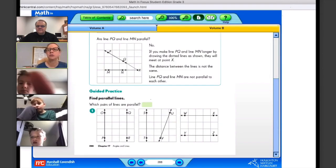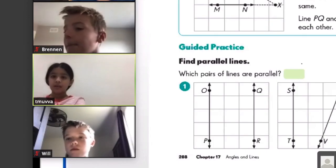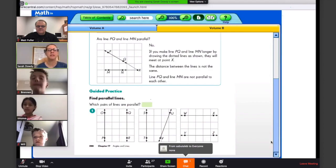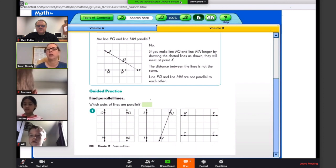Tell me which pairs are parallel. OP and QR? Okay, so we would say OP is parallel to QR. Excellent.